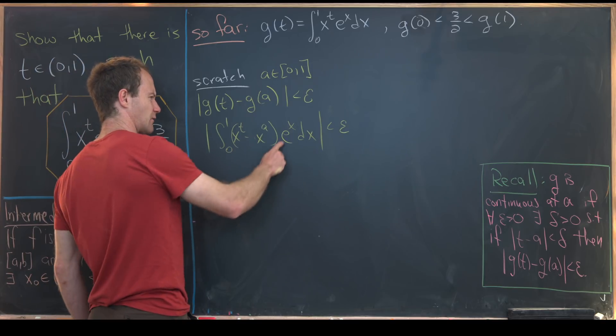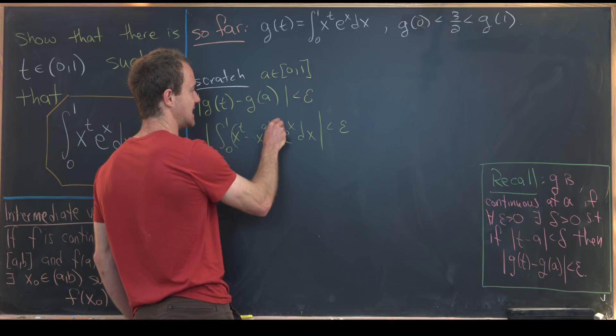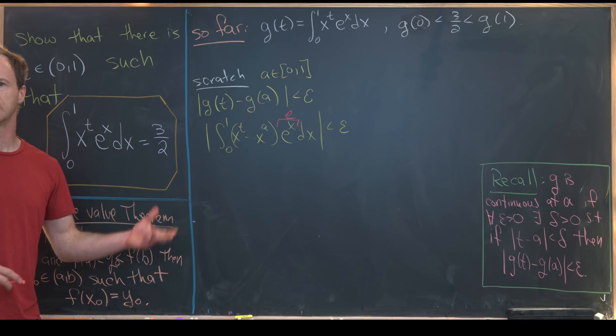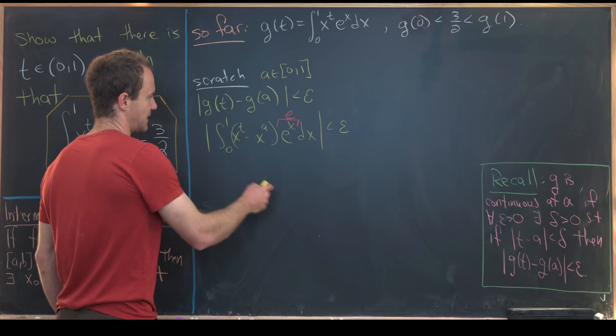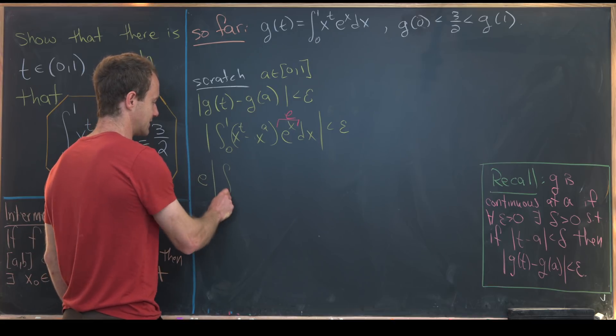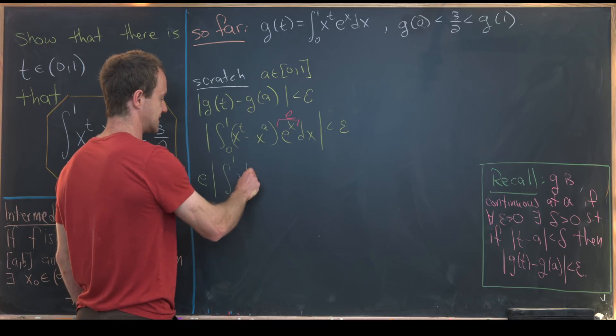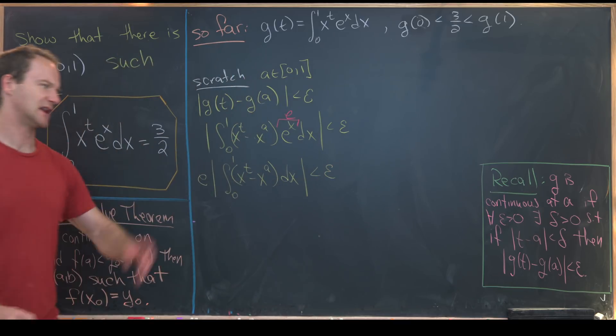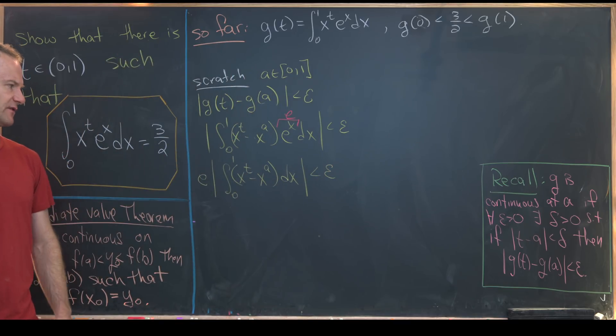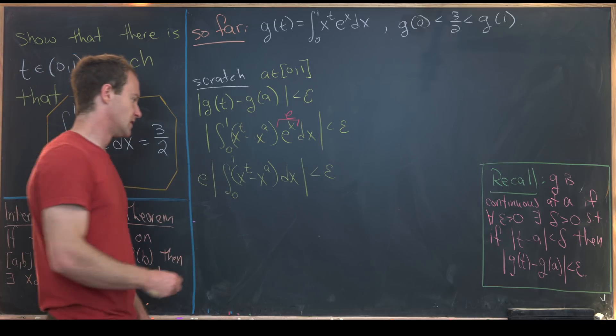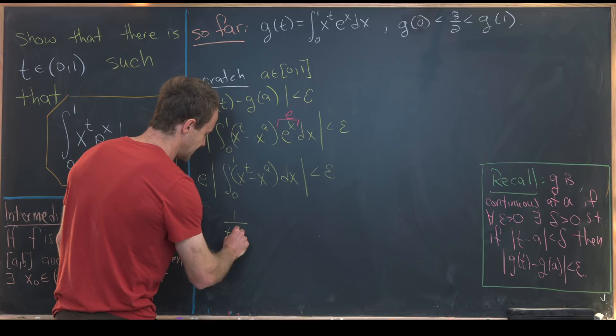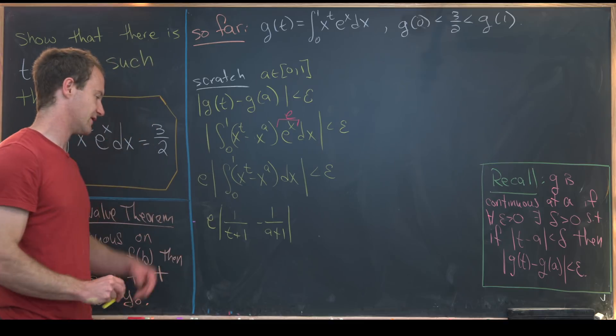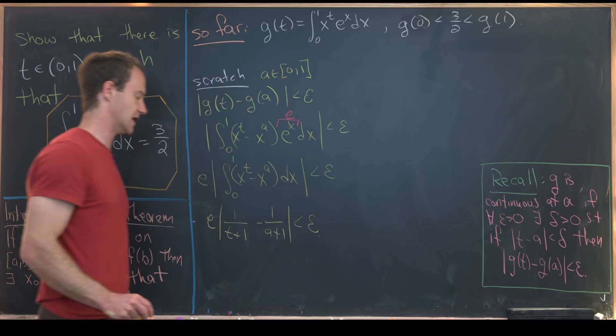But now we can replace e to the x with just e, given that it's an increasing function on the interval zero to one, so we might as well replace it with its maximum. So that will tell us that we have e times the absolute value from zero to one of x to the t minus x to the a dx less than epsilon. So now that's kind of our new goal. Now we can take the anti-derivative and plug one and zero in. Notice that that will give us one over t plus one minus one over a plus one. Those are still in absolute values. We have e multiplied outside and we have epsilon on the other side of the equation.